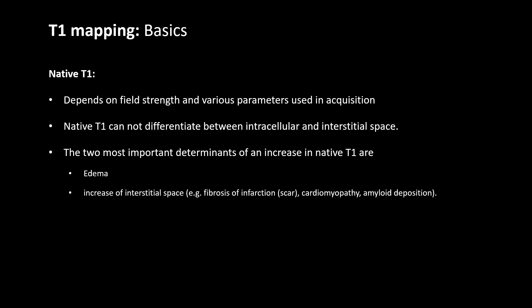As with T2 mapping, T1 mapping also depends on many factors like field strength and various parameters used. Native T1 value cannot differentiate between the various compartments of the myocardium — intracellular and extracellular spaces — so it cannot differentiate where the pathology is coming from. In this way, it is more sensitive but less specific. The two most important things which determine an increase in native T1 value are edema and an increase of the interstitial space.